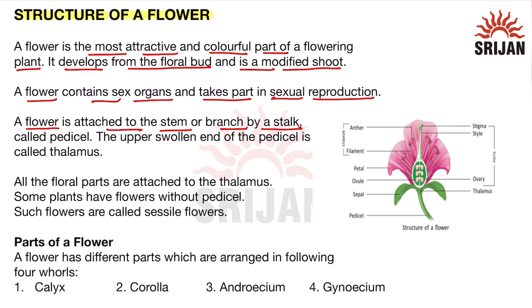A flower is attached to the stem or branch by a stalk known as the pedicel. We can see in this figure which shows the structure of a flower — the pedicel connects the flower with the branch or stem. The upper swollen end of the pedicel is called the thalamus, and all the floral parts are attached to the thalamus.